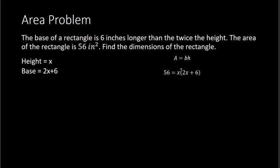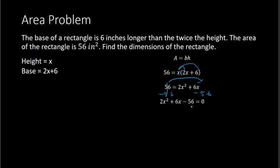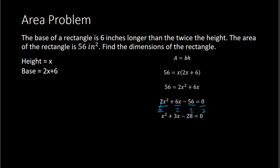From here I can solve. I distribute x to both terms, giving me 2x squared plus 6x. We want to set this equal to 0, so I subtract 56 from both sides, giving 0 equals 2x squared plus 6x minus 56. Now I notice each term can be divided by 2, which makes it simpler. Dividing everything by 2, I now have x squared plus 3x minus 28 equals 0.